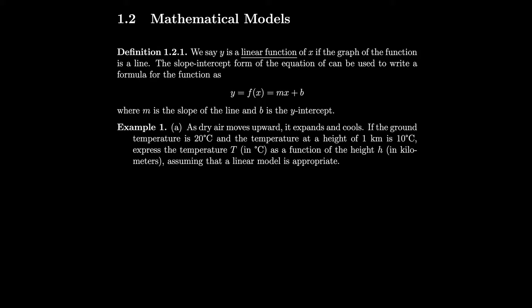We know that this model is supposed to be linear, so we can write T equals mh plus b instead of y equals mx plus b. We also know that the temperature is 20 degrees at a height of 0, because it's the ground temperature. So that means 20 equals m times 0 plus b, and since m times 0 is just 0, we get 20 equals b. We also know that 10 is the temperature at 1 kilometer, so we have 10 equals m times 1 plus 20, because we know b is 20.